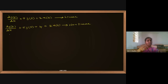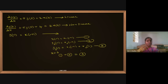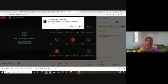For y(n) = x(−n): the general procedure is — in case 1 put x1, in case 2 put x2, in case 3 put x1 + x2 in place of x. This gives equations 1, 2, and 3. Combine equations 1 and 2 and check if the RHS equals equation 3's RHS. If equal, it is a linear system. The solution confirms x(−n) is linear.